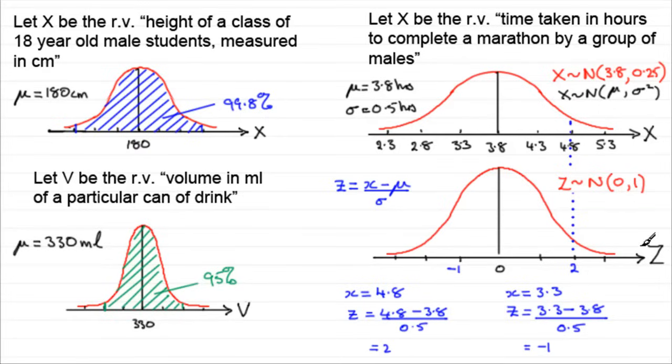So can you see what z represents? It's a transformation that we take from any normal distribution. And what it does, it tells us how many standard deviations we are above or below the mean. So if you worked out the 4.3 here, you'd find that comes to 1, the 5.3 would be 3, and so on, 2.8 minus 2, and 2.3 minus 3.